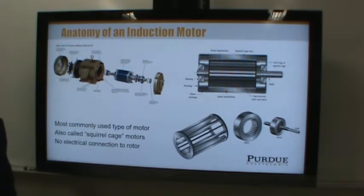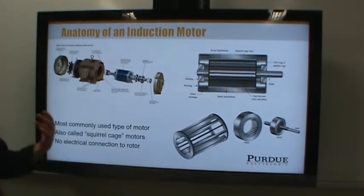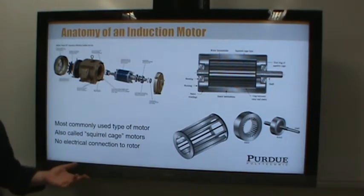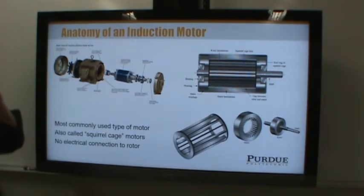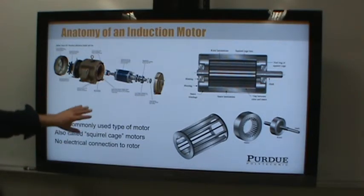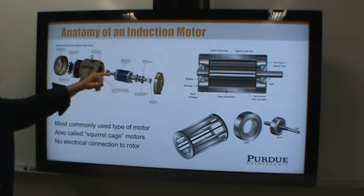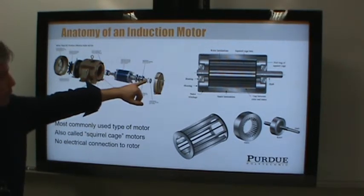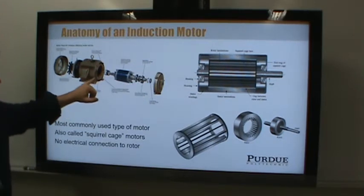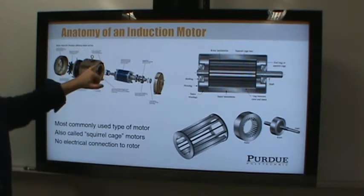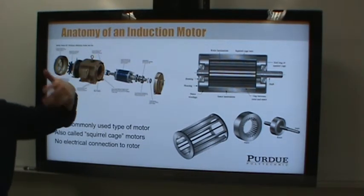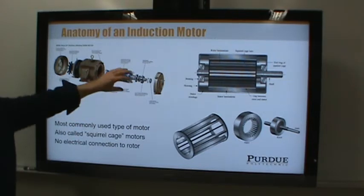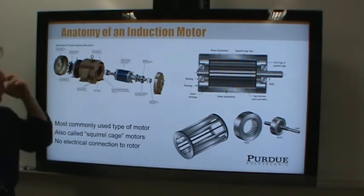Most of these motors are so-called induction motors and they use what's called a squirrel cage. Basically, you've got a rotor connected to the shaft and a coil on what's called the stator. The stator is the part that's stationary; the rotor is what rotates.